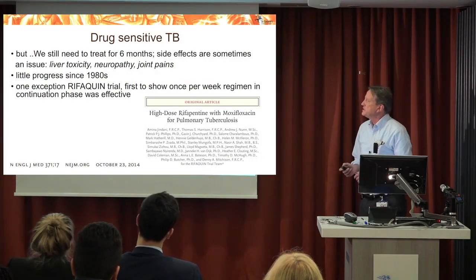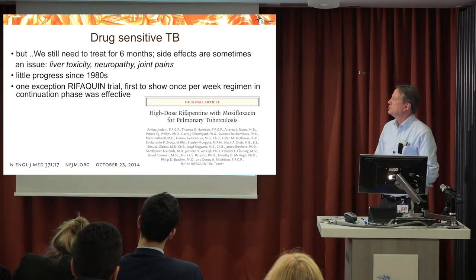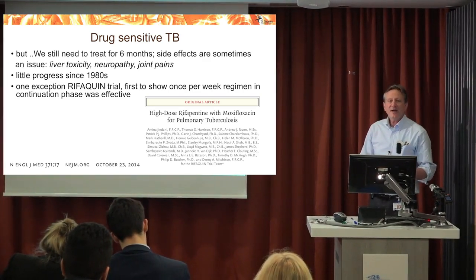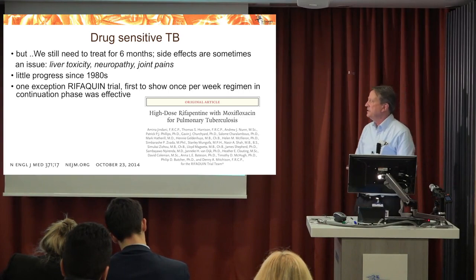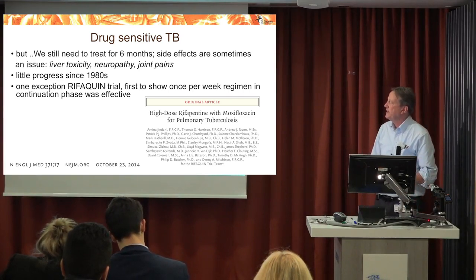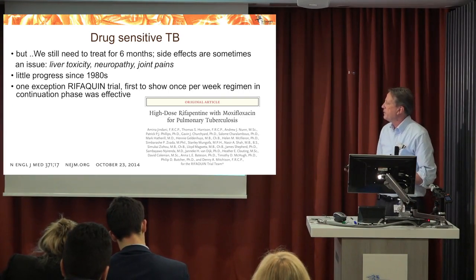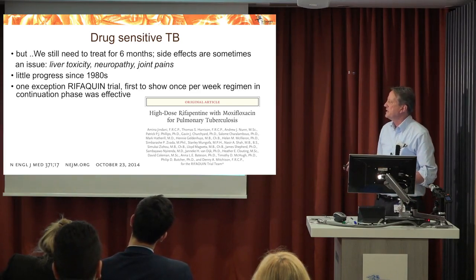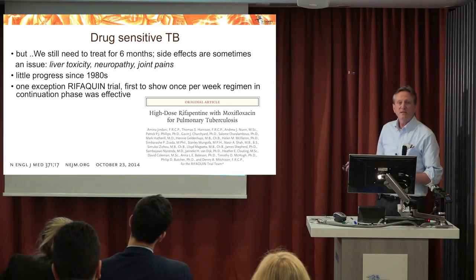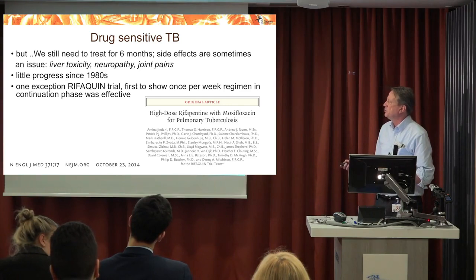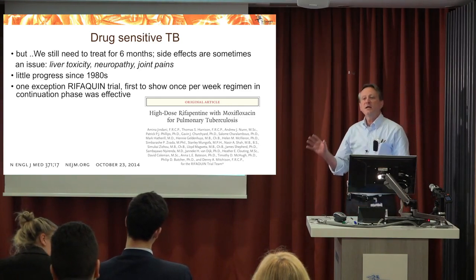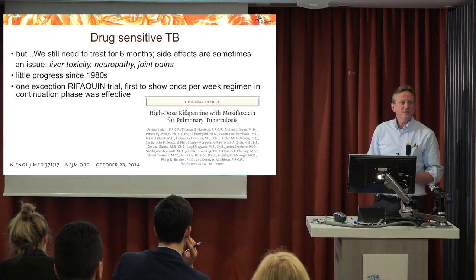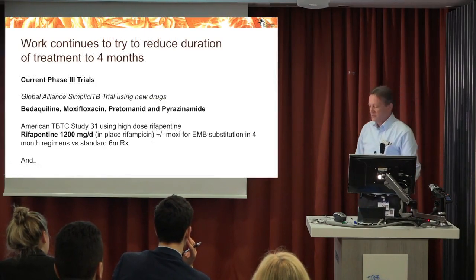We still need to give six months of treatment, which is a long treatment with common side effects including liver toxicity, neuropathy, and joint pains. There has been little progress since the 1980s, with one exception — the Rifaquin trial at St. George's, led by Amina Jindani and Denny Mitchison. This trial showed that a combination of high-dose rifapentine and moxifloxacin, given just once per week during the follow-up four months of treatment, is a great advantage for TB programs and patients.